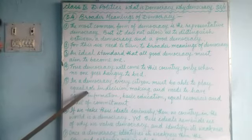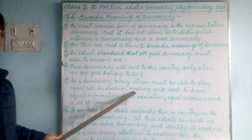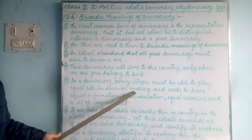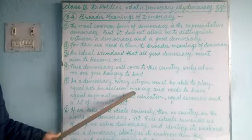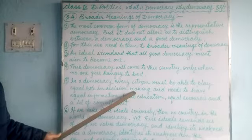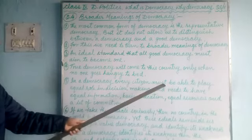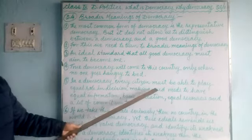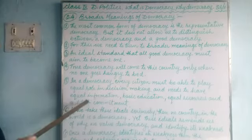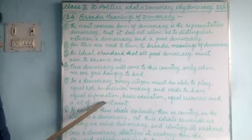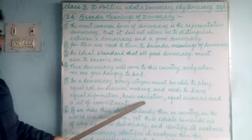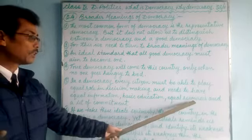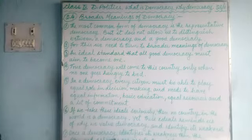The second feature: in a democracy, every citizen must be able to play an equal role in decision making. In many countries, many people are not allowed to participate in decision making. In a good democracy, all the people must be able to play equal roles in decision making, and for that they need equal information, basic education, equal resources, and a lot of commitment.